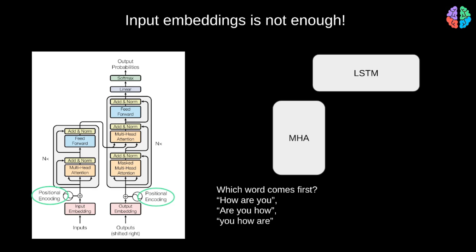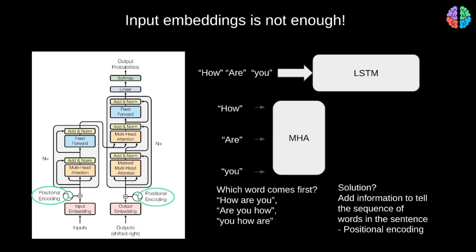We now have a problem when it comes to transformers. Up until LSTMs were state of the art, we used to pass the input words in sequence so that the model knows the order of the words. However, transformers take the entire sequence as input in parallel. Even though this is one of the biggest advantages of transformers, the order of the words in the sentence is lost. So we should somehow find a way to tell the order in which the words occur. Going back to our example 'how are you,' all combinations like 'are you how,' 'you how are,' are all treated alike by the transformer — it produces the same output for all of them because there's nothing in the input to specify the order of the words. So the solution lies in what is called positional encoding.